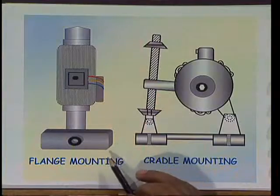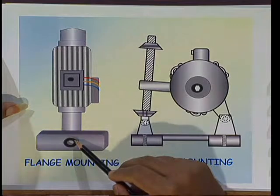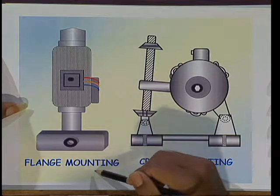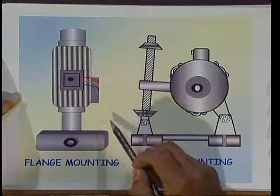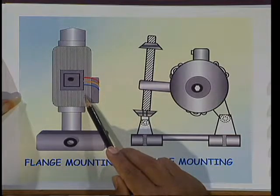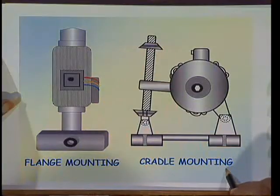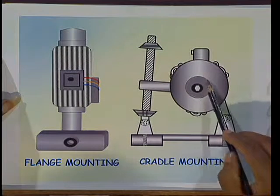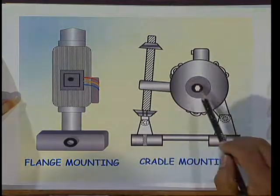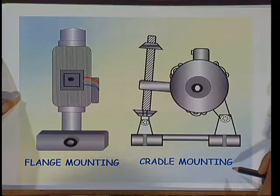Another type is the flange type mounting. In flange type mounting, the motor and flange are both fixed directly on the load. This arrangement is called flange mounting, and we can generally observe this in jet pumps. In cradle mounting, the motor is fixed on a cradle, with adjustment of shaft position. This arrangement is called cradle mounting, generally observed in loom houses.